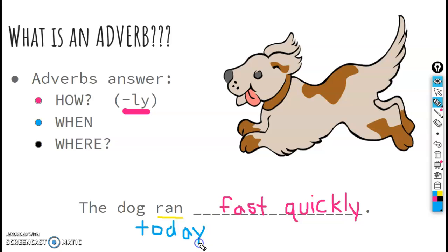Other when adverbs might be now. When did the dog run? Now. Or early, later, then, next. Those are all different when adverbs. They tell us when we are doing something. In this case, when the dog is running.